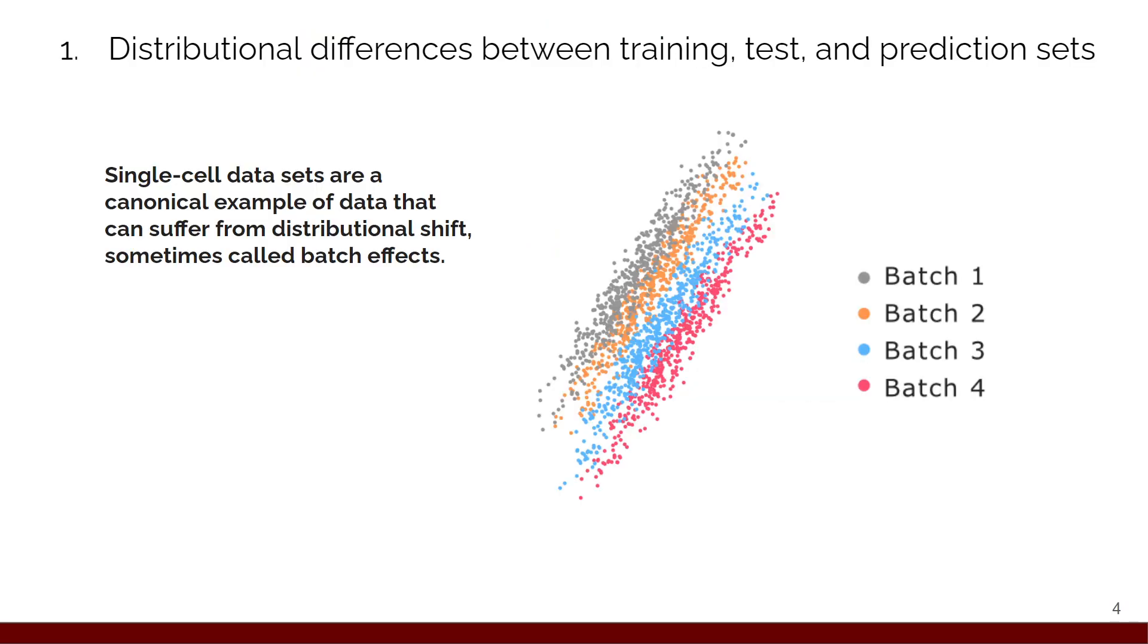So the first one is failing to account for distributional differences between the training, test, and prediction set. I'll get to what the prediction set is in a second. A canonical example of distributional differences in genomic datasets comes from different batches in single-cell data. You may get data that looks something like this. Each of the different batches or experiments that you collected your data from, despite coming from the same underlying phenotype, like the same cell type or tissue, exhibits different distributional differences, as you can see here.